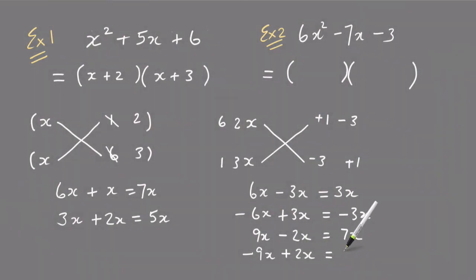That equals minus 7x, which is the middle term. So that means that's one bracket there. That's one bracket, 2x minus 3, and the other bracket here is 3x plus 1. There it is, it's factorized.